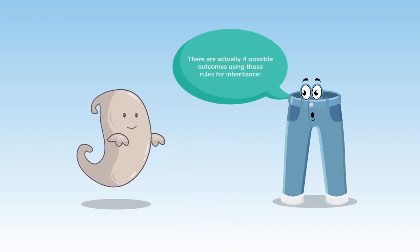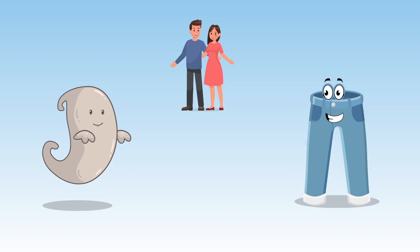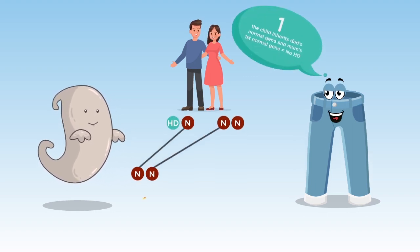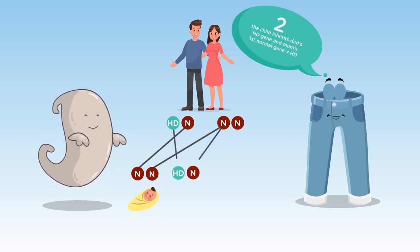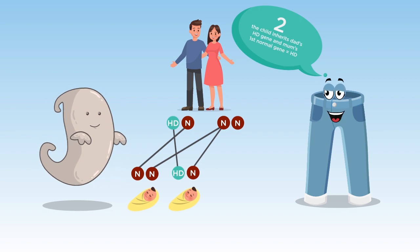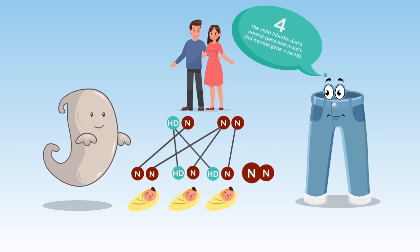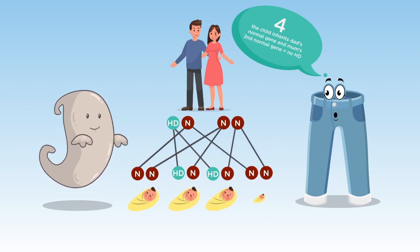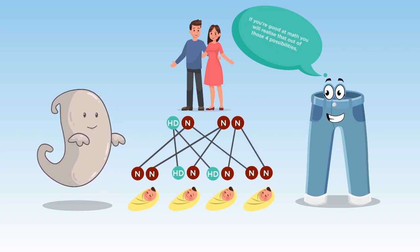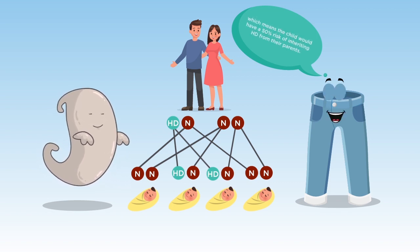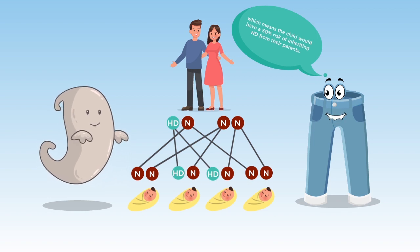One, the child inherits dad's normal gene and mom's first normal gene, equaling no HD. Two, the child inherits dad's HD gene and mom's first normal gene, equaling HD. Three, the child inherits dad's HD gene and mom's second normal gene, equaling HD. Four, the child inherits dad's normal gene and mom's second normal gene, equaling no HD. If you are good at math, you will realize that out of those four possibilities, two cause HD and two don't, which means the child would have a 50% risk of inheriting HD from their parents.